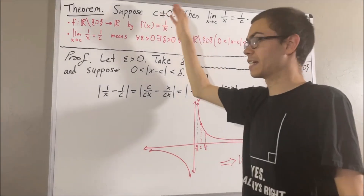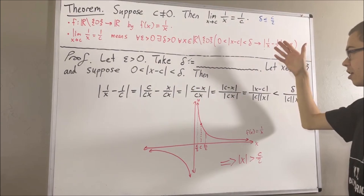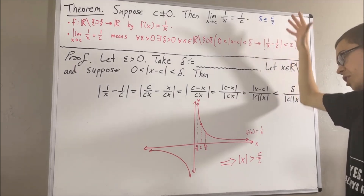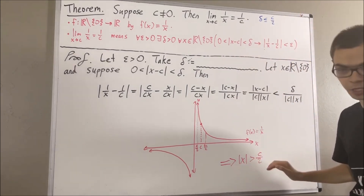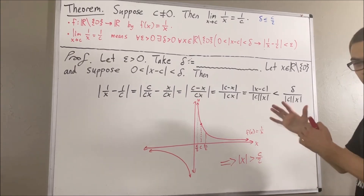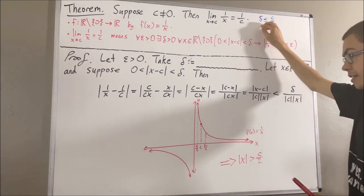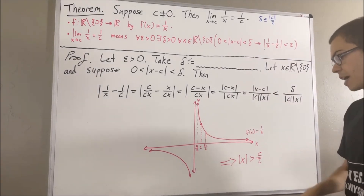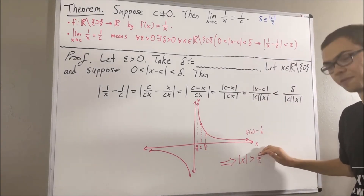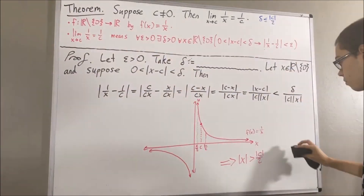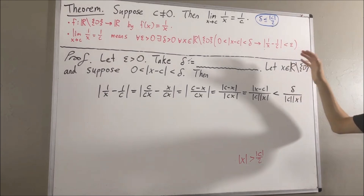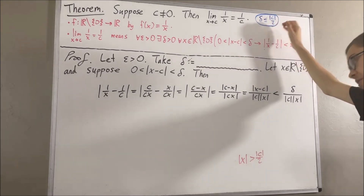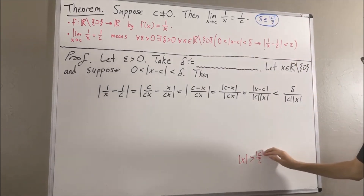We get a similar setup in the case where c is less than 0. In that case, we would instead restrict delta to be less than or equal to the negative of c over 2, and we should expect absolute value of x to be greater than the negative of c over 2. To account for both cases, all we've got to do is restrict delta to be less than or equal to the absolute value of c over 2. And we should expect absolute value of x to be greater than the absolute value of c over 2. So, using this restriction, let's show that absolute value of x must then be greater than absolute value of c over 2.